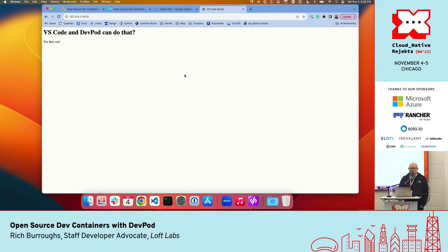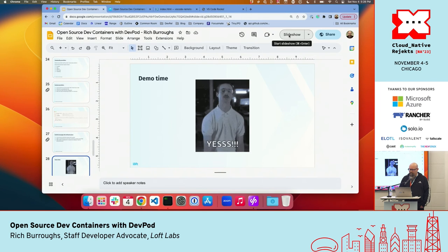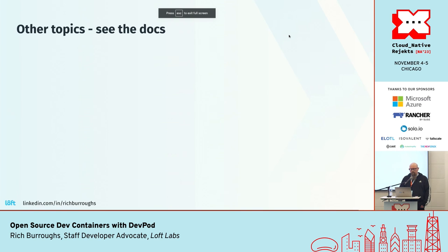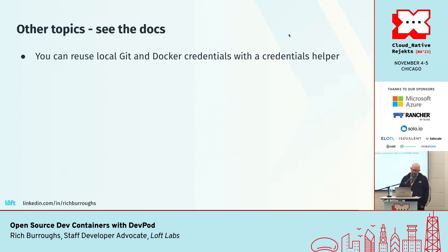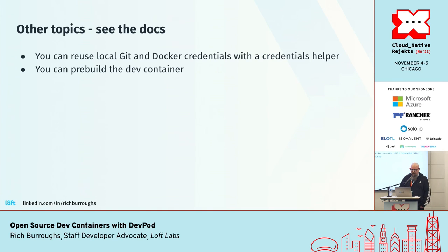There we go — we've got our changes. That's a super basic example; a real workflow would be more complex. Some more advanced topics: you'll probably want to commit things inside the container and push to GitHub or a Docker registry — you can use a credentials helper to make your local Git and Docker credentials available inside the dev container. You can pre-build dev containers, and if you're a big Vim user, there's a way to use DevPod with Vim too. All these topics are covered in the docs.